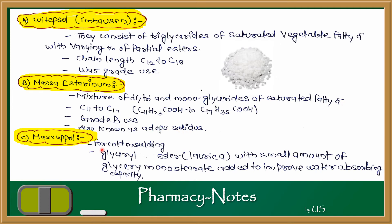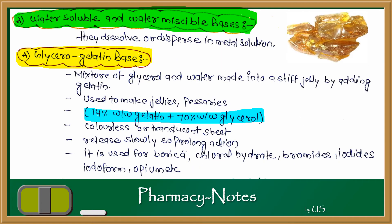Massa Suppol is used for cold molding — you mix the system and fill it into molds. It is made up of glyceryl esters of lauric acid with a small amount of glyceryl monostearate added to improve water absorbing capacity. Basically, water absorbing capacity is improved by incorporating glyceryl esters along with a small amount of glyceryl monostearate.